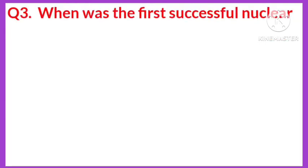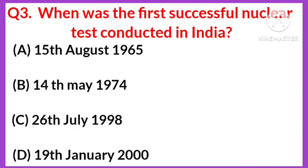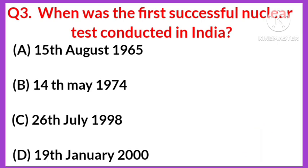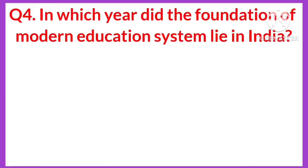Question number three: when was the first successful nuclear test conducted in India? Your options are: A) 15 August 1965, B) 14 May 1974, C) 26 July 1998, D) 19 January 2000. The answer is option B, the 14th of May 1974.